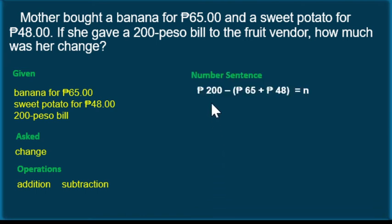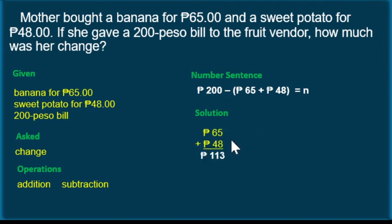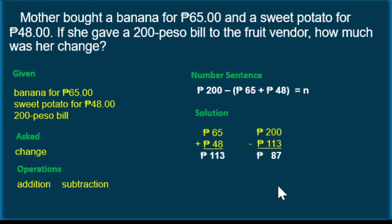The number sentence would be: 200 pesos minus (65 pesos plus 48 pesos) equals n. We can see that 65 and 48 are grouped inside the parenthesis, meaning we add first before the subtraction. Now, 65 plus 48 is equal to 113 — that is the total amount of food bought. Why do we have 200 pesos as the first number? Common sense: you can't buy without money. From your money, we subtract 113, and the change is 87 pesos.